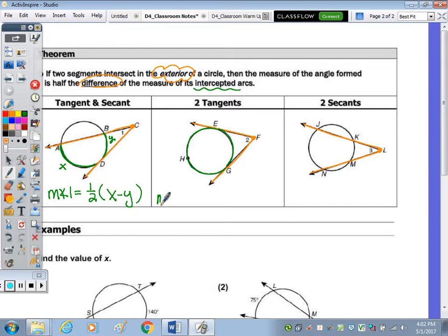So I'm going to write that in terms of its letters. So the measure of angle 2, because that's outside the circle, is one half of the larger or the outer arc, so the measure of E, H, G, subtract the measure of the inner arc, which is E, G.